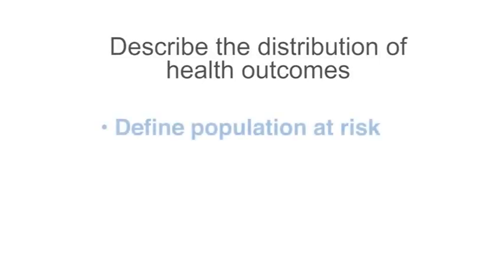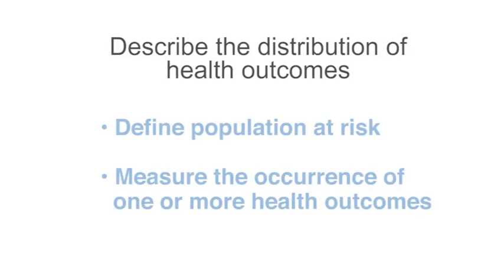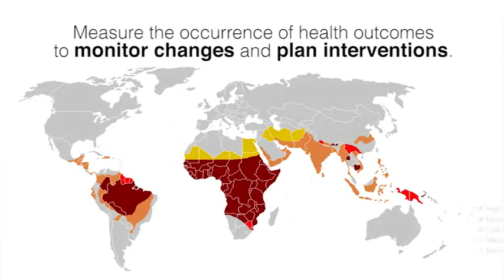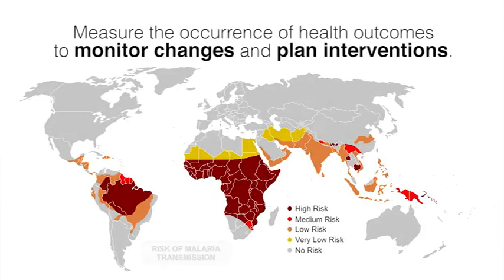In order to describe the distribution of health outcomes, we first need to define the population at risk and then measure the occurrence of one or more health outcomes in the population. We need to be able to measure the occurrence of health outcomes in a population in order to monitor changes and plan interventions. For example, this map illustrates differences in malaria transmission among various regions of the world, with parts of Africa and South America having the highest risk. We can use this data to plan and target malaria interventions.